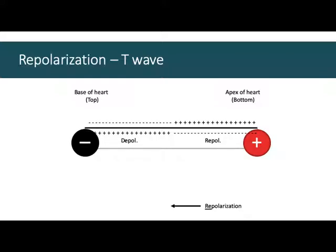It becomes more polarized. So a negative wave towards a negative electrode gives an upwards deflection. We're pumping out those positive ions, making the inside more negative. It's a negative wave. It's moving from right to left. Negative wave towards a negative electrode. It's a positive deflection.